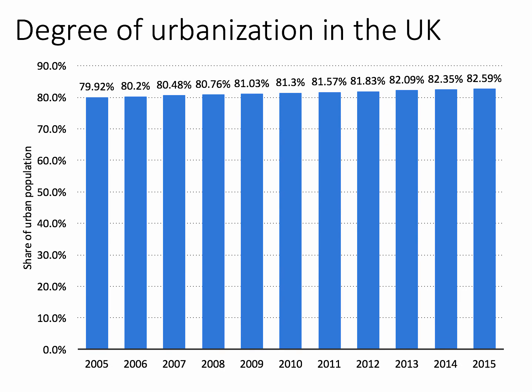There has also been a subtle but important increase in the degree of urbanisation. This chart shows the degree of urbanisation in the UK from 2005 to 2015, measured as the percentage of the entire population living in urban areas. The latest data shows that around 83% of the population lived in cities in 2015, up from just under 80% ten years ago.